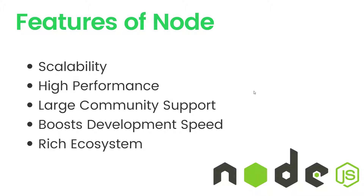Moving forward, the features of Node.js. The first is scalability. Node.js applications are easily scalable vertically and horizontally. Vertical scaling lets you add more resources to the current nodes, while horizontal scaling enables you to add new nodes quicker. Furthermore, Node.js applications do not require a large block of the entire development process, as they work with a set of microservices and modules.